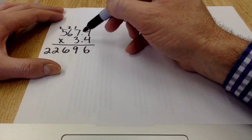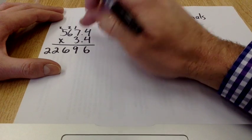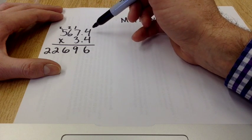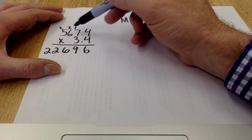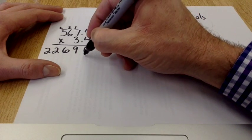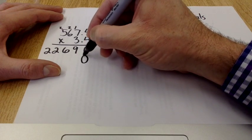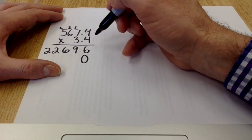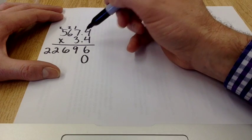For the second line, what I'm doing is, again, if we ignore the fact that there's a decimal in there, I'm not multiplying 567.4 times 3. I'm multiplying 567.4 times 30. As a result, the easiest way to do that is to put a 0 in right here in the ones column, and that acts as a placeholder.